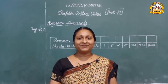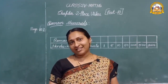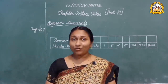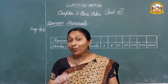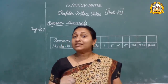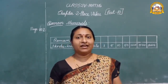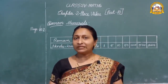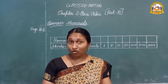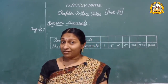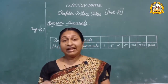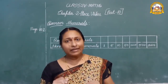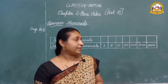Good morning children. In the last class we were learning the international place value chart. Today we are going to learn Roman numerals. You know some Roman numerals, at least 1 to 20. Today let us learn more things on Roman numerals. The Roman system for counting numbers uses seven letters from the Latin alphabet to represent the number values. Okay, let us start.